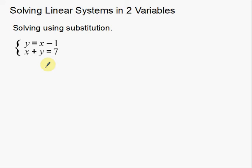When you're using substitution to solve a system, you have to have a single variable by itself. Notice we have a y over here — it's all by itself. So this system is set up where we want it to. It has a variable by itself, and we can use that to basically plug into the second equation. I'm going to use the fact that y is equal to x minus 1 and plug that in to the second equation for y.